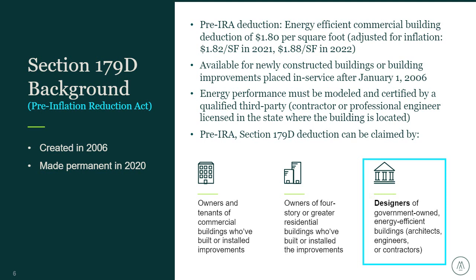A unique aspect of 179D is that both building owners and designers can take advantage of the deduction. This includes owners and tenants of commercial properties, owners of four-story or greater residential buildings. Importantly for this group, designers of government-owned energy efficient buildings — which typically would be the architecture, engineering, and contractors doing design work — can also take advantage of Section 179D.